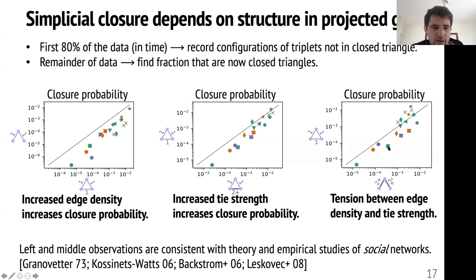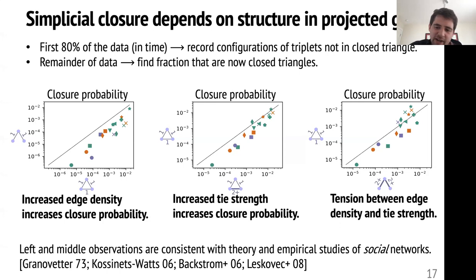The observations on the left and in the middle are actually consistent with classical social network theory, although a lot of these aren't social networks. But the idea on the right — the tension between tie strength and edge density — was something that hadn't really been thought about before.